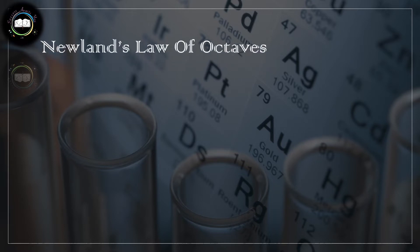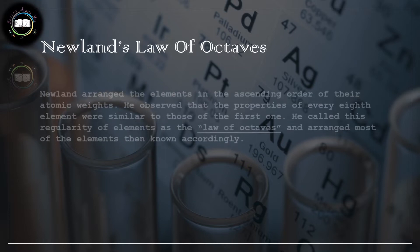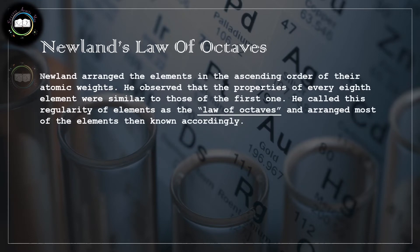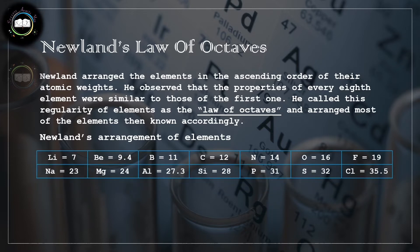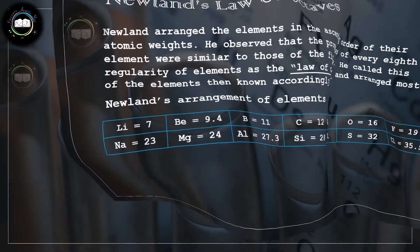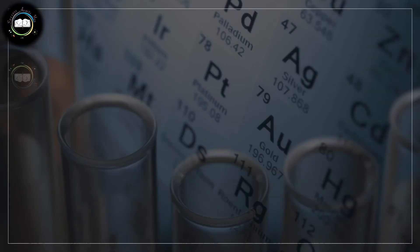The next attempt was made by an English chemist, Newland, between 1864 and 1869. He arranged the elements in ascending order of their atomic weights and observed that the properties of every eighth element are similar to the properties of the first one. He called this regularity the law of octaves. For example, lithium and sodium are both alkali metals, and sodium is the eighth element after lithium.